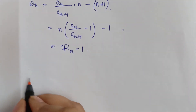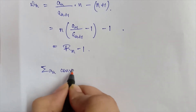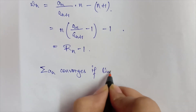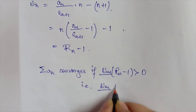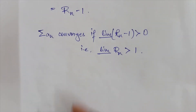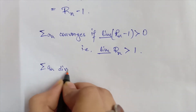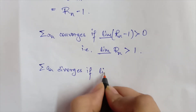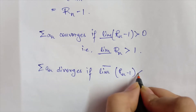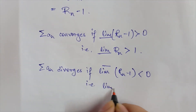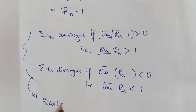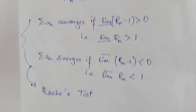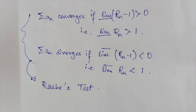This equals r_n - 1. From here, Kummer's test gives us: the series a_n converges if the lower limit of r_n - 1 is greater than 0, meaning the lower limit of r_n is greater than 1, and the series a_n diverges if the upper limit of r_n - 1 is less than 0, meaning the upper limit of r_n is less than 1. This is Raabe's test.